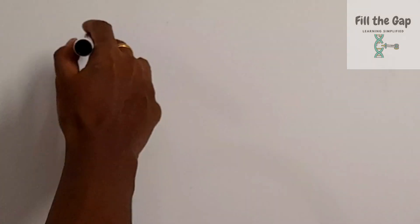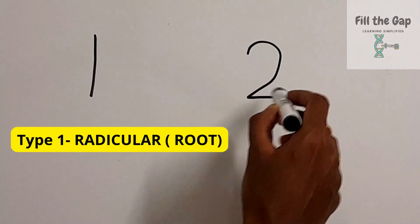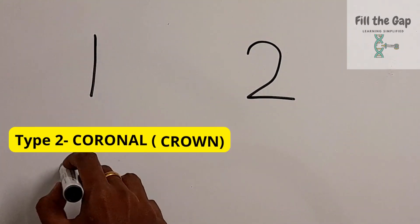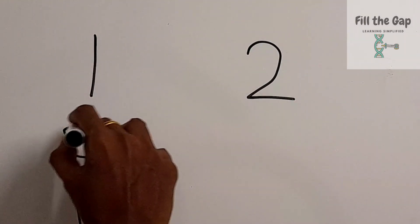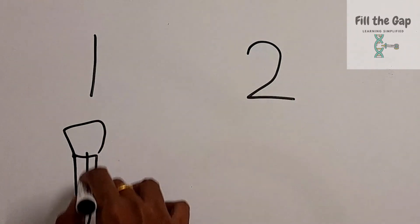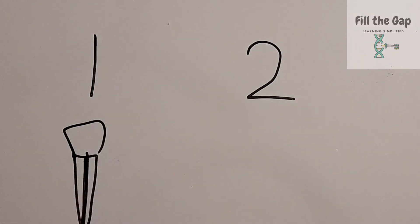There are two types of dentine dysplasia. Type 1 is radicular, relating to the root, and Type 2 is coronal, relating to the crown. If we draw a tooth, the root part of the tooth looks like the number 1.